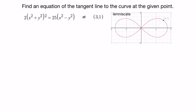To find the equation of any line — be it a tangent line or otherwise — we need two things: the slope and a point on the curve. We already have the point (3,1), but we need to find the slope. Since the derivative is the slope of the tangent line at any point on a curve, we need to find the derivative of this equation.